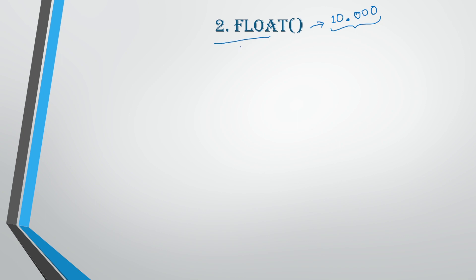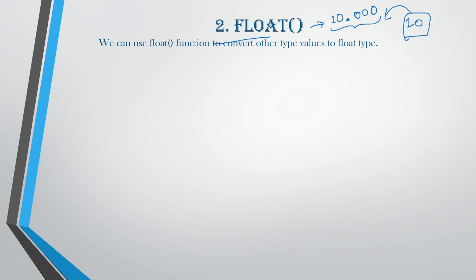We can use the float function to convert other type values to float data type. For example, if we have an integer, we can convert this integer into float type, that is with a decimal point. For example, float(10) will be converted to 10.0, a decimal point with a zero after it.